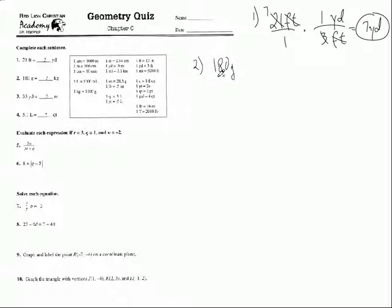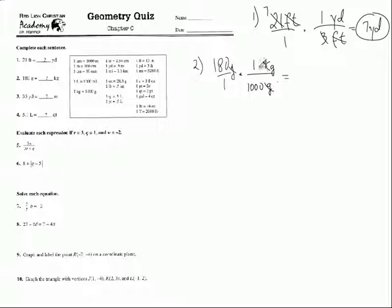Number two: 180 grams. Put that over one, and multiply by a unit multiplier to convert to kilograms. I want to get rid of grams, so grams goes on the bottom and kilograms on top. From the chart, one kilogram equals 1,000 grams. Grams cancel out, leaving kilograms. So we do 180 divided by 1,000, which is just moving the decimal three places to the left, giving us 0.18 kilograms.